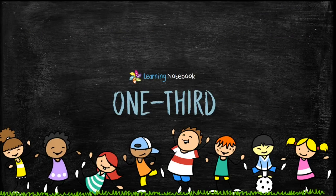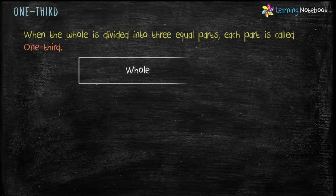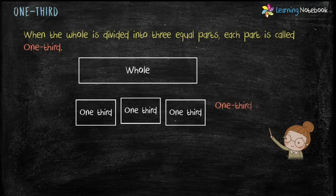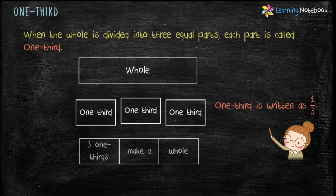Now let's see what is one-third. When the whole is divided into three equal parts, each part is called one-third. One-third is written as 1 by 3. Three one-thirds make a whole.